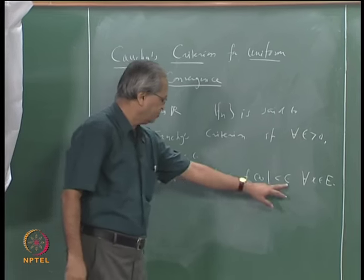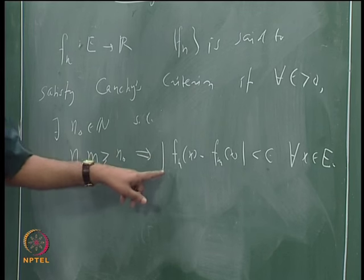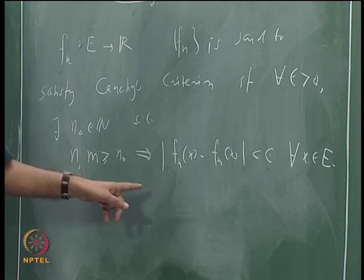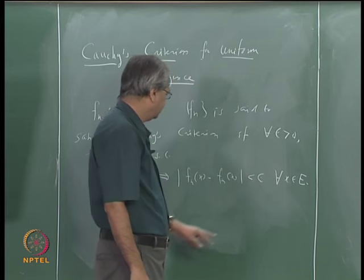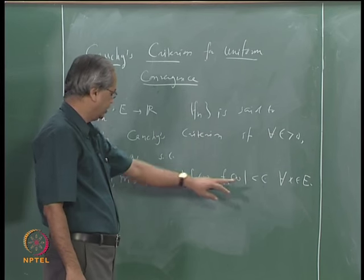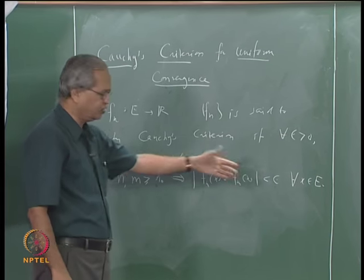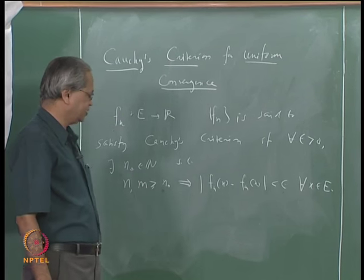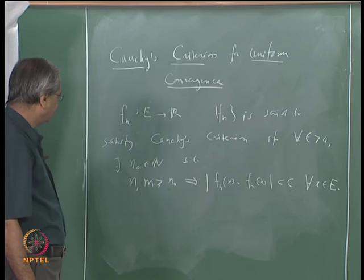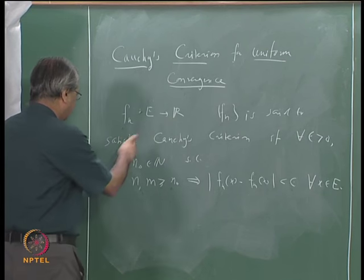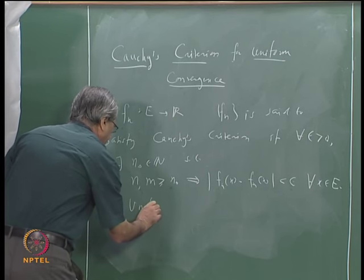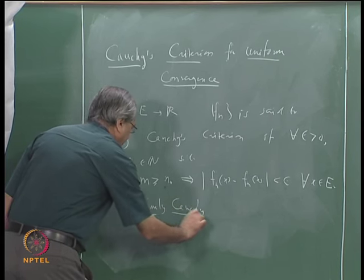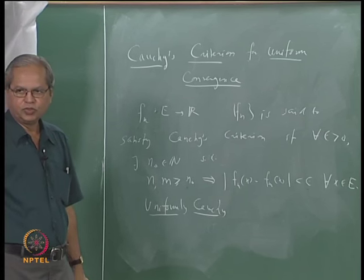If we had simply stopped at requiring that for every x in E the sequence f_n(x) is a Cauchy sequence, that would only give pointwise Cauchy behavior. What we want is something more: the N_0 should be independent of x, meaning the same N_0 must work for every x in E. Such a sequence is called uniformly Cauchy, or we say f_n is a uniformly Cauchy sequence.